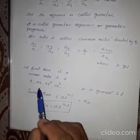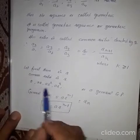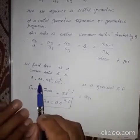So, you can check that second term upon first term is equal to third term upon second term. That is same throughout. So, this is a GP.